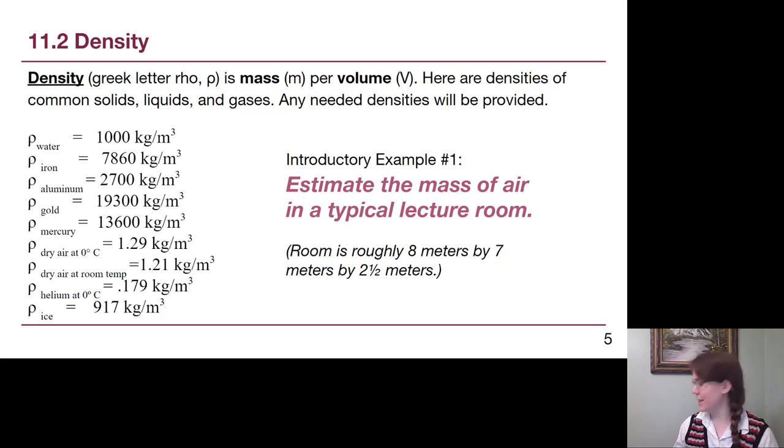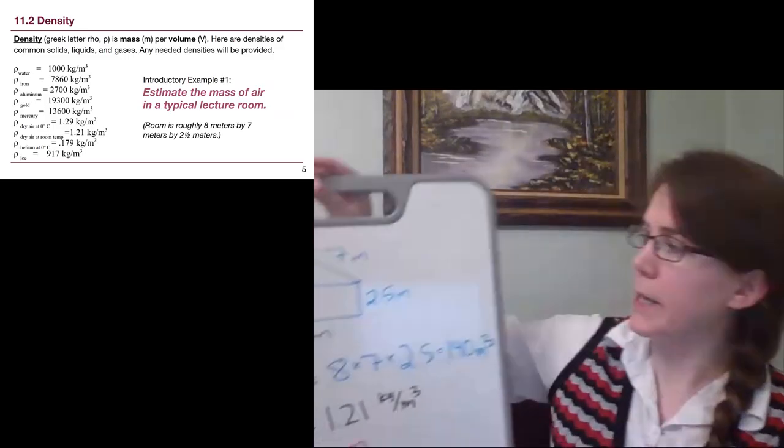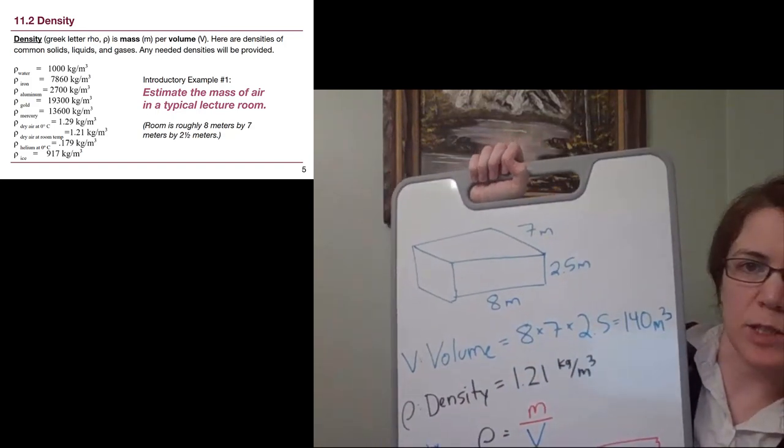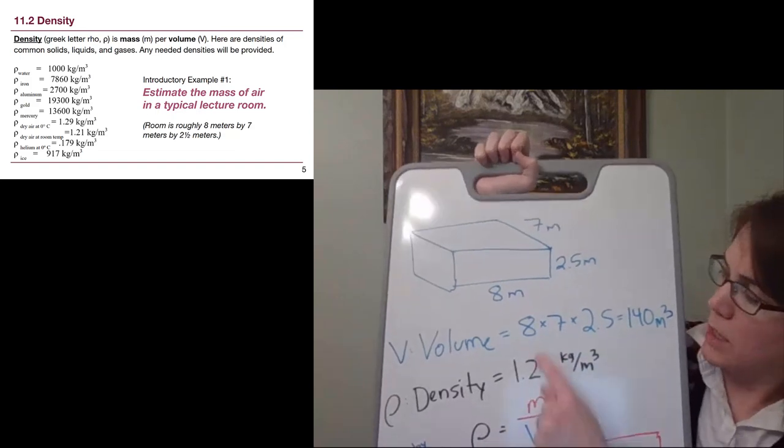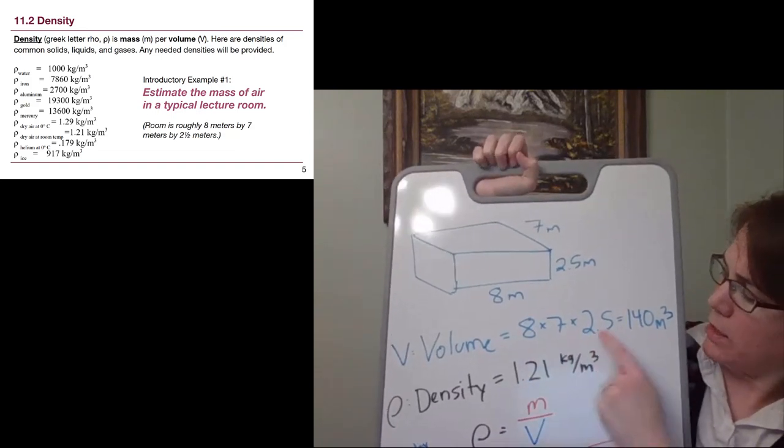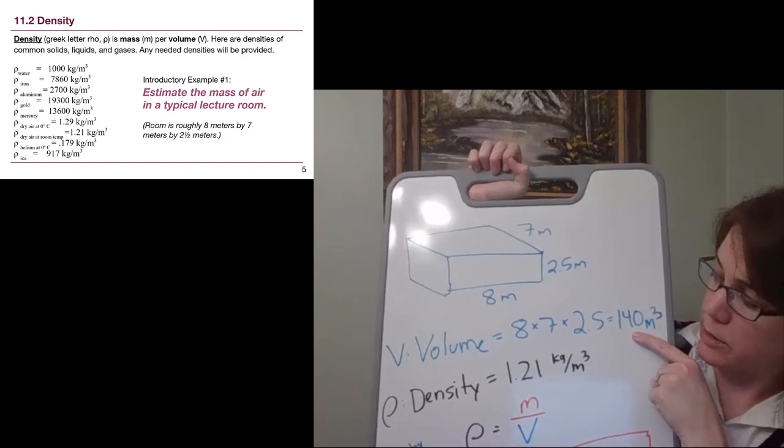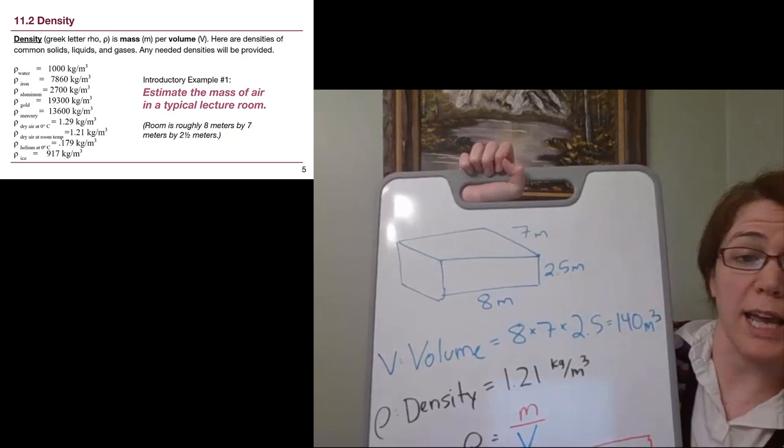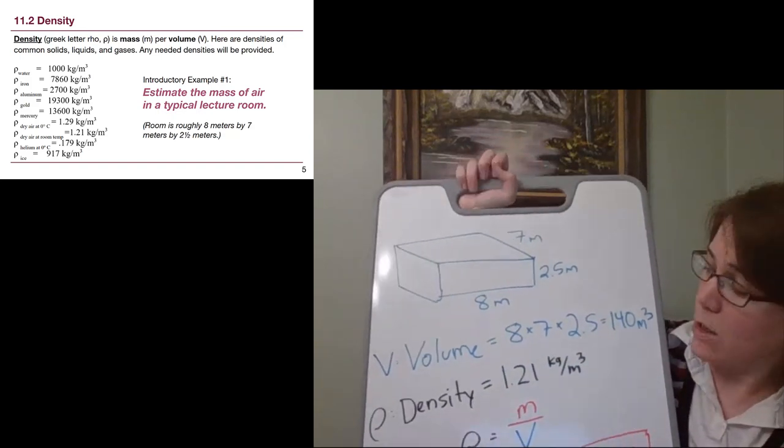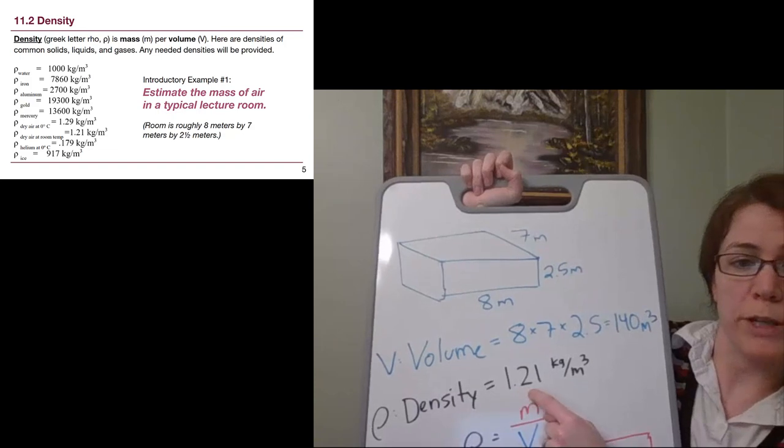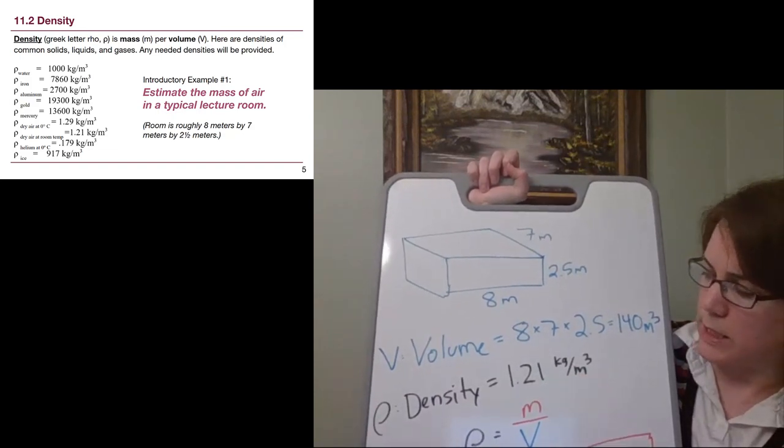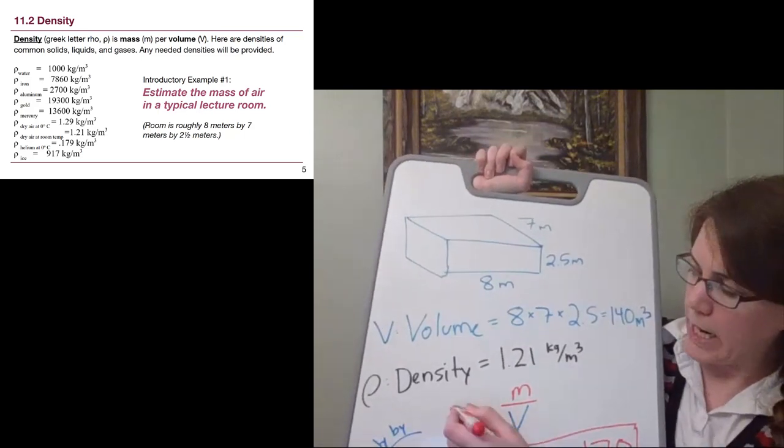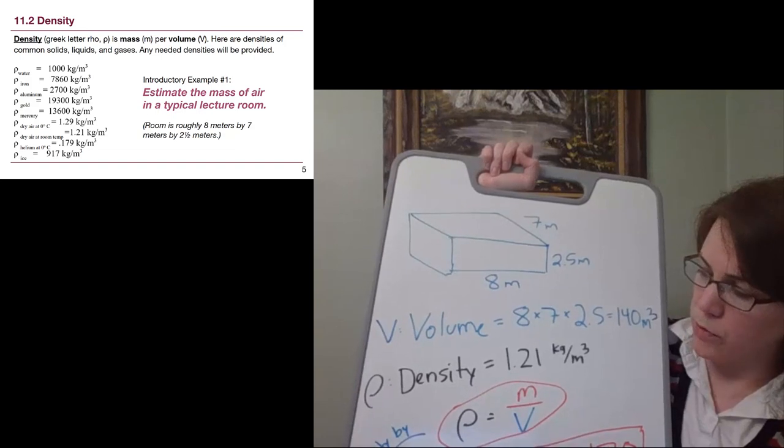Hopefully you paused it and have tried it. The shape here is just a kind of simple rectangular prism. The volume is length times width times height. So the volume is 140 cubic meters. The density, if we looked at that whole entire list, there was dry air at room temperature, 1.21 kilograms per cubic meter.